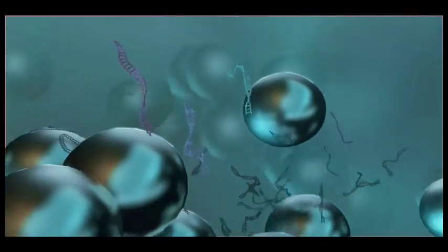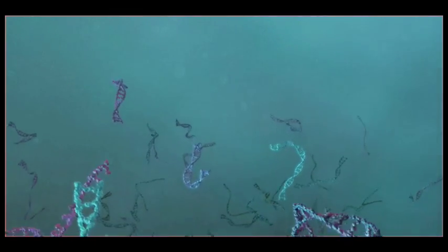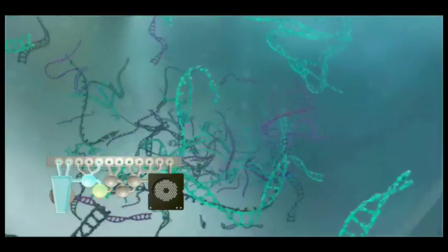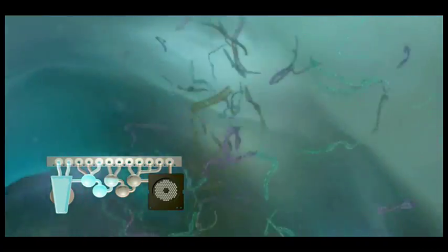Next, an elution buffer releases the purified nucleic acids from the magnetic beads. The magnetic beads are again magnetically secured while the nucleic acids are moved to the first stage PCR chamber.